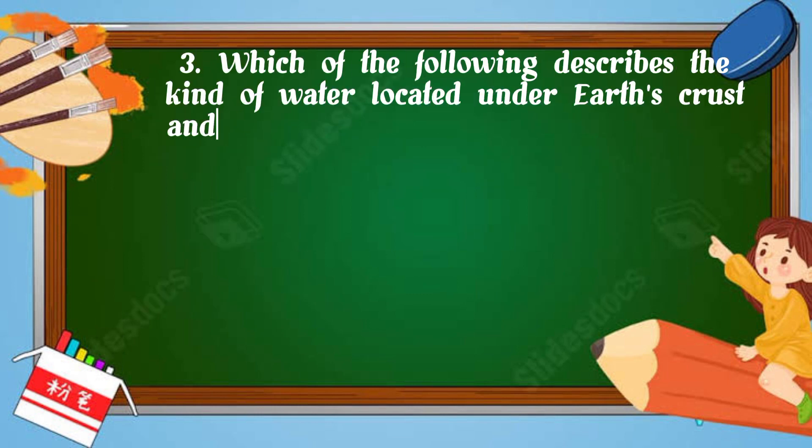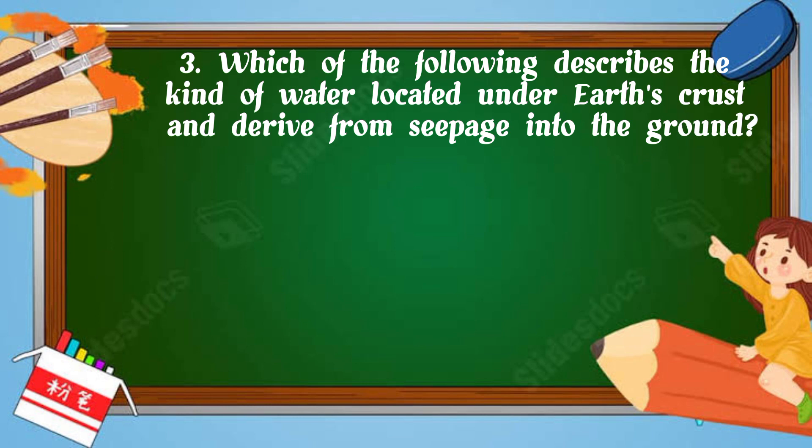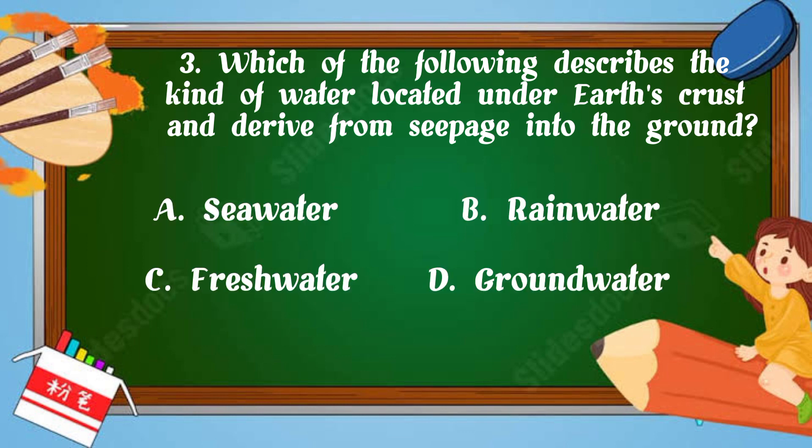Number 3: Which of the following describes the kind of water located under the earth's crust and derived from seepage into the ground? A. Seawater, B. Rainwater, C. Freshwater, D. Groundwater. Your timer starts now. Time is up! What is your answer? Amazing! The correct answer is letter D.